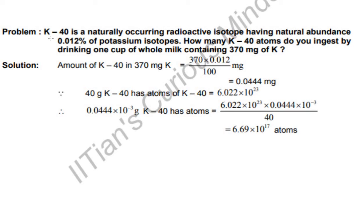Hello friends, let us solve this problem. K-40 is a naturally occurring radioactive isotope having natural abundance of 0.012% of potassium isotopes.